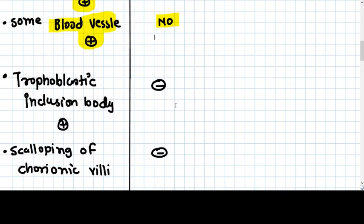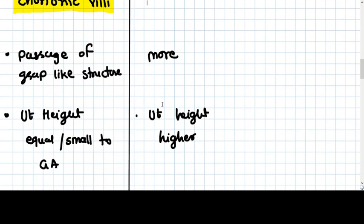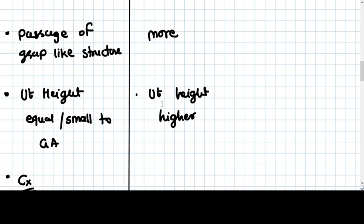In partial mole, we see trophoblastic inclusion bodies and scalloping of the chorionic villi, which is not seen in complete mole. The grape-like structures are present in both moles, but are more prominent in complete mole.